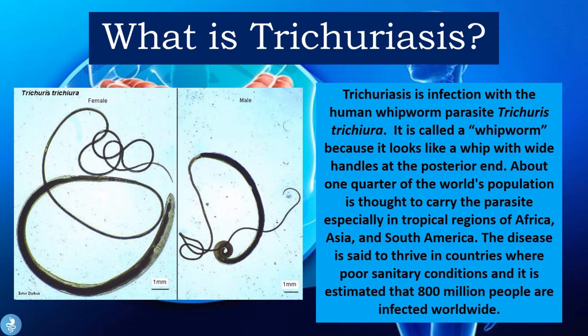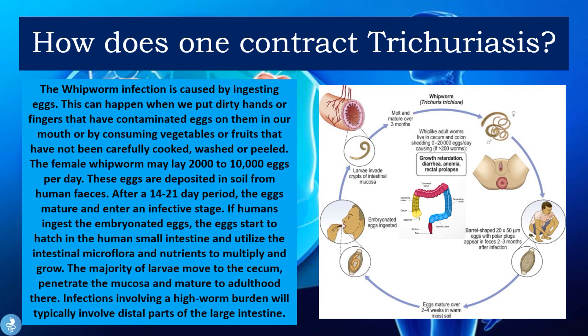The whipworm infection is caused by ingesting eggs. This can happen when we put dirty hands or fingers that have contaminated eggs on them in our mouth, or by consuming vegetables or fruits that have not been carefully cooked, washed, or peeled. The female whipworm may lay 2,000 to 10,000 eggs per day, and these eggs are deposited in the soil from human feces.